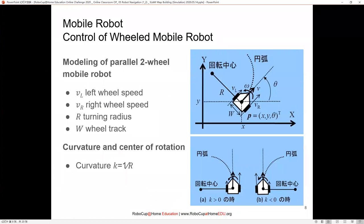Now let's model the parallel two-wheel design to understand how we can calculate or estimate odometry for localization. The four important parameters are: left wheel speed (vL), right wheel speed (vR), the turning radius (for non-point turns), and the wheel track (the distance between the left and right wheels). We can derive equations based on these parameters, as shown on the right-hand side.